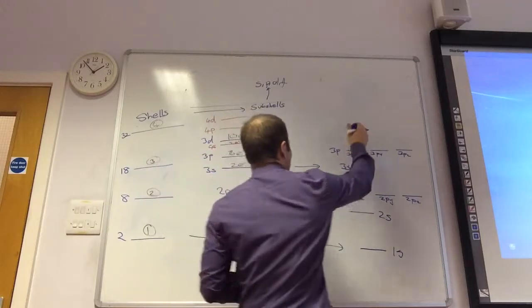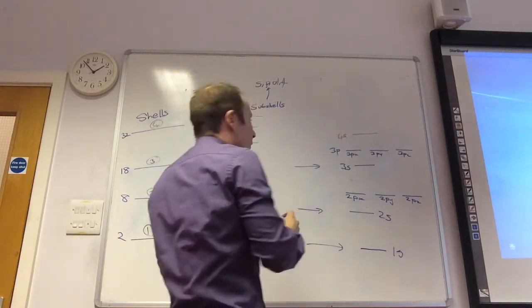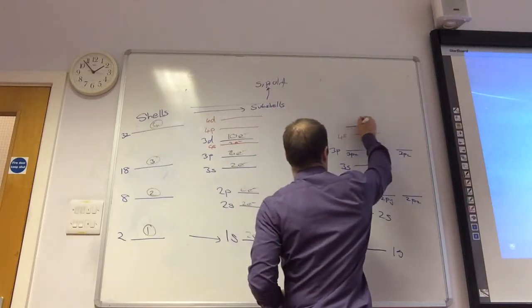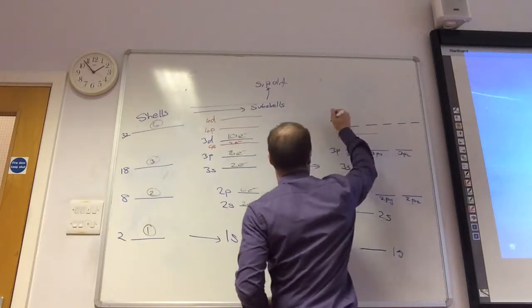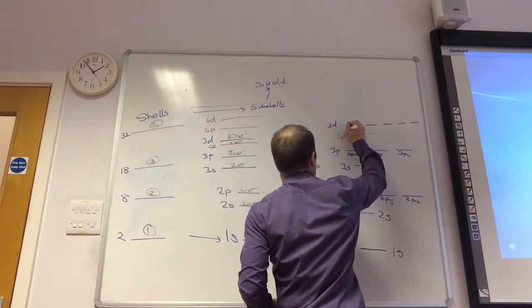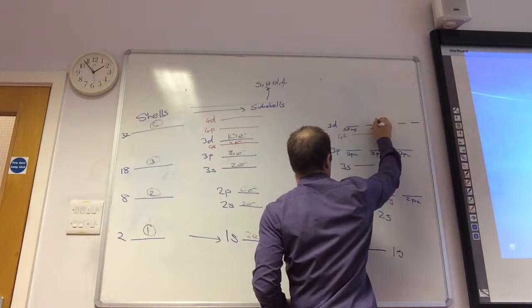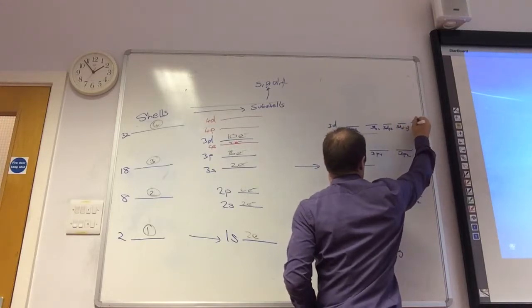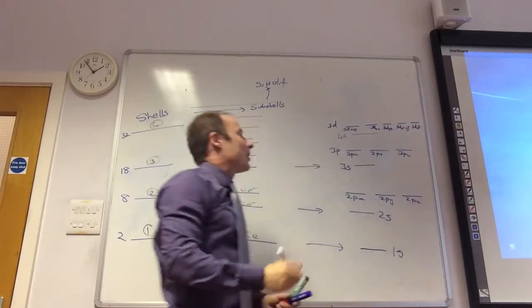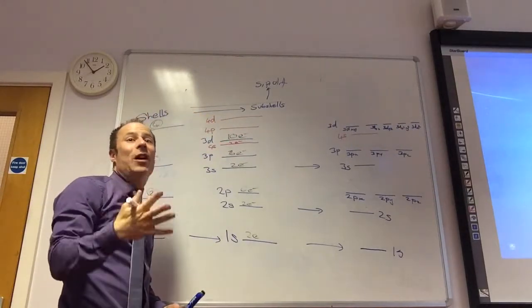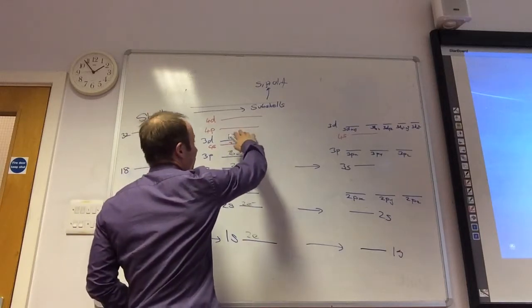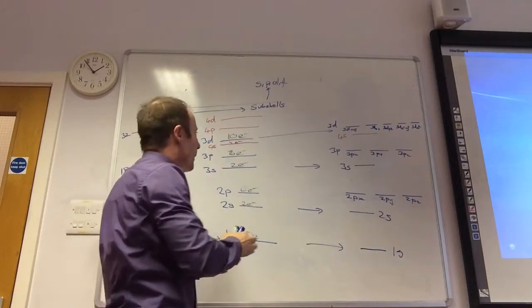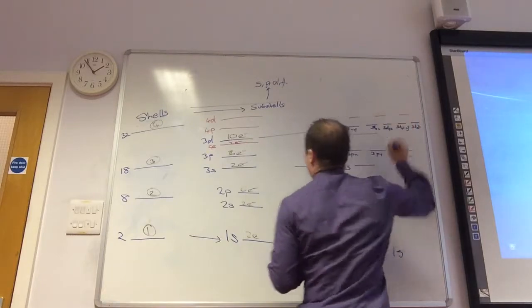Then we go to the 4S. I did that in a different colour. The 4S is going to be 3D. Can anybody remember? I'm going to have 5. You don't need to remember what they're called: the 3DXY, 3DXZ, the 3D with YZ, 3DX squared minus Y squared, and 3DZ squared. The main things you get, that there are 5 orbitals that make up the 3D. After that, then, of course, you get to your 4P again, which is going to be 3.